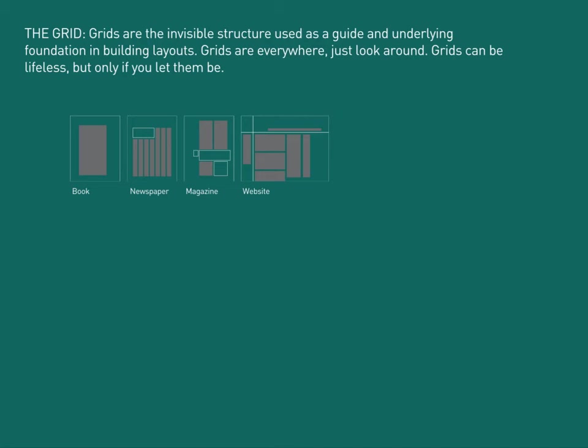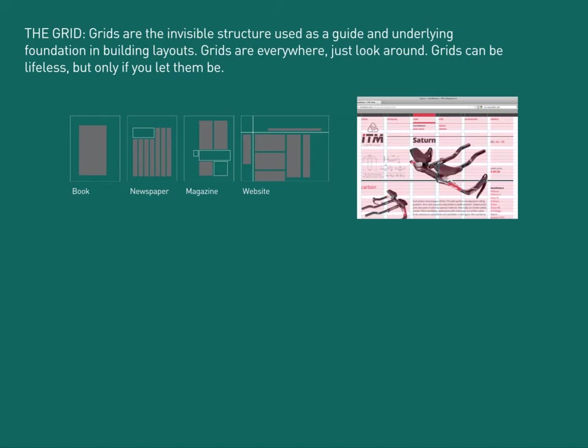Newspapers usually have like a seven column grid. Magazines tend to have a two to three column grid. And websites tend to have this reverse L. Yours doesn't have to be like this, but I wanted to show you typically how websites work — this reverse L formation with navigation on top, maybe navigation on the left, logo in the upper left-hand corner, and maybe a two or three column grid with the content here.